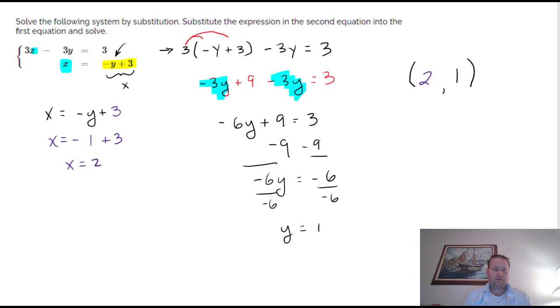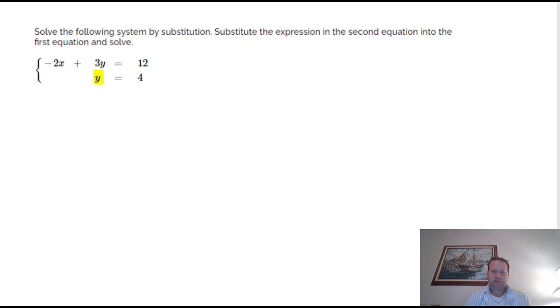Now let's go to one last problem that is tailor-made, easy for substitution. And the reason that it's easy again is because we already know one of the letters is already by itself. In this case, y is equal to 4, and we're going to replace that y right there with a 4.